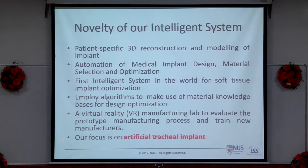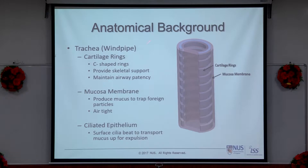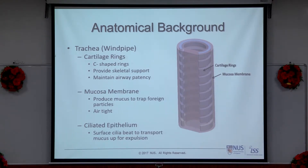Today our focus is on the creation of the artificial trachea implant. This is the anatomy of the upper human body — we have the nose, the mouth, and this is the trachea, which is the windpipe of the human body, running parallel to the oesophagus. The trachea consists of a T-shaped cartilage ring lined in parallel in longitudinal form — it's like a tube that you breathe through. This tube is very flexible because it allows you to bend your neck, rotate your head, and the tube will move as well.